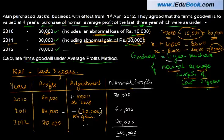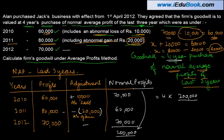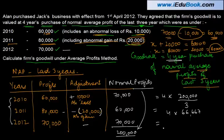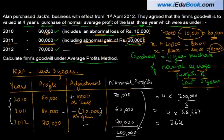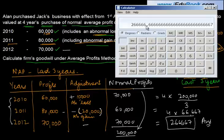Goodwill is to be valued at 4 year purchase, meaning 4 times the normal average profits. My total normal profits were 2,00,000. The average profits will be 2,00,000 divided by 3, because I am taking 3 years. So: 4 times 2,00,000 equals 8,00,000, divided by 3 equals 2,66,667. That's the value of goodwill — 2,66,667, rounding off.